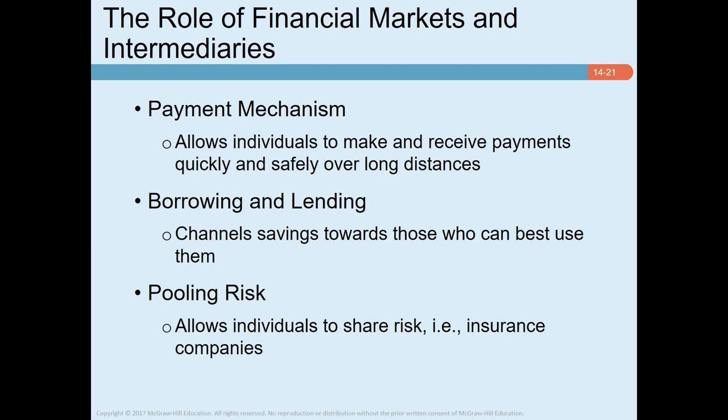The last role is pooling risk. Financial markets and institutions allow firms and individuals to pool their risk. For instance, insurance companies make it possible to share the risk of an automobile accident or a household fire. For example, if you have only a small sum to invest, you could buy the stock of a single company, but you would be wiped out if that company went bankrupt. It is generally better to buy shares in a mutual fund that invests in a diversified portfolio of common stocks or other securities, exposing you only to the risk that security prices as a whole will fall.